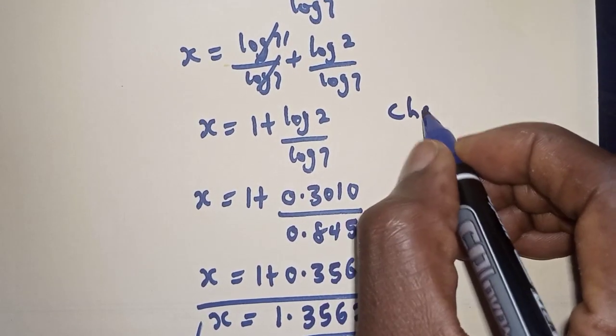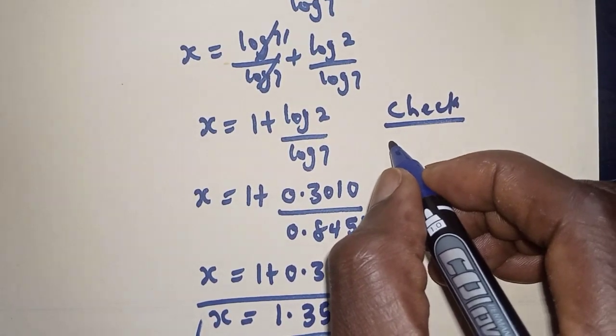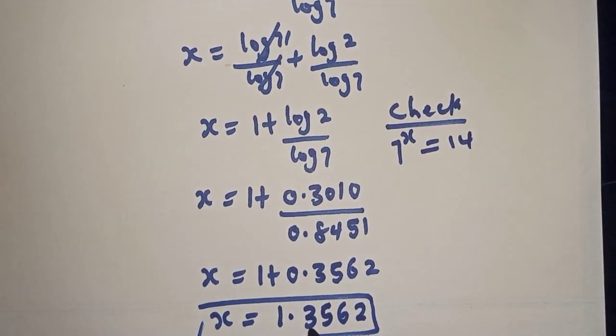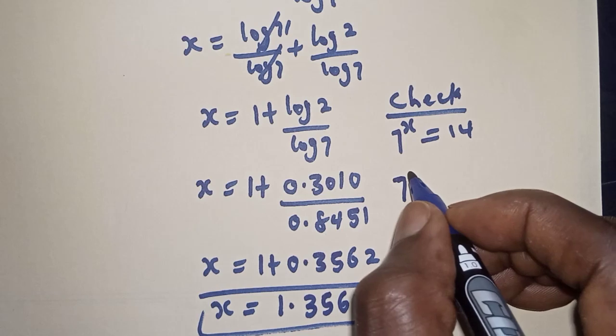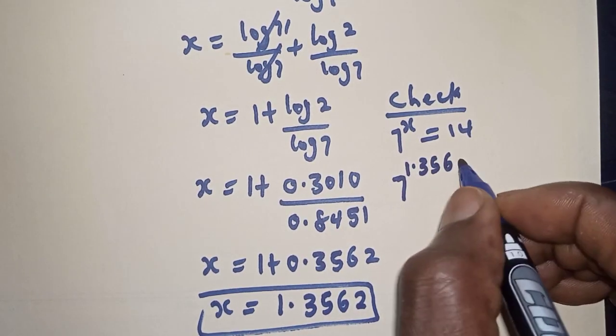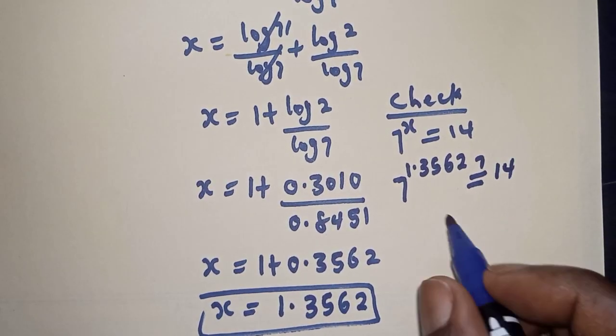We can check to confirm if our answer is right. Let's check the given equation: 7 raised to power s is equal to 14. With s equal to 1.3562, we have 7 raised to power 1.3562, which must equal 14.